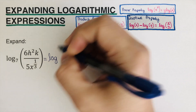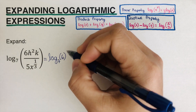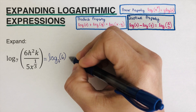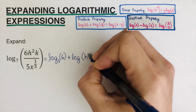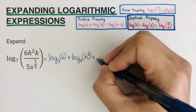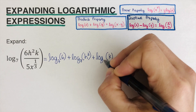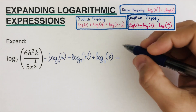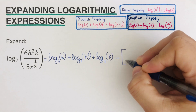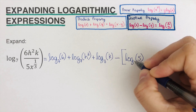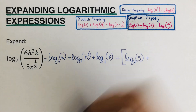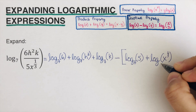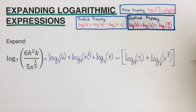It's going to be log of 6 to the base 7. Since this is a multiplication, product property means you add them. So that's log of 6 to the base 7, plus log of h squared to the base 7, plus log of k to the base 7. And then since these ones are on the denominator, that means we're dividing, so we minus them. That's minus log of 5 to the base 7, plus log of x to the power 1/3 to the base 7. This is how the expression looks.